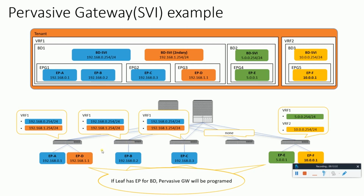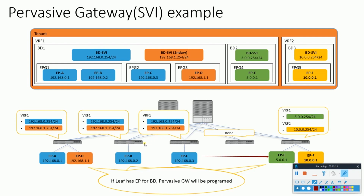Bridge domain BD1 has two SVIs configured — for example 192.168.0.254 and 192.168.1.254 — and those SVIs will be configured on all the leaves where that bridge domain is configured. If a leaf has an endpoint for the bridge domain, the pervasive gateway is programmed on that leaf. If we want to establish communication between, say, endpoint C and endpoint E, we need to bind a contract between the two. By configuring the contract, it allows leaking of the required routes, establishing communication. Only the routes are shared between VRFs, not the SVI itself — the SVI stays at its own leaf. For L3 traffic, the leaf needs the pervasive route to be sent to the spine proxy; if the route — say 5.0.0.0/24 — is not installed on the leaf, the leaf will drop the packet.